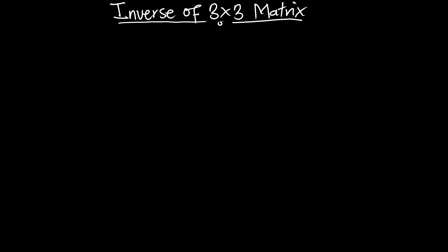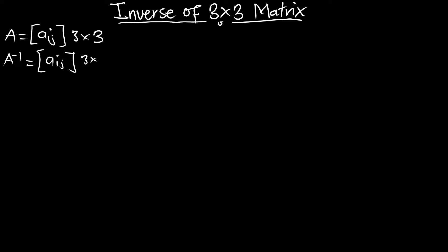Given a matrix A in the form Aij, which is a 3x3 matrix, the inverse of A is going to be written as A inverse, and that is also going to give us a matrix in the form Aij, which is also a 3x3 matrix. In this episode, we are going to focus on an approach for finding the inverse of a matrix called the cofactor and determinants approach.